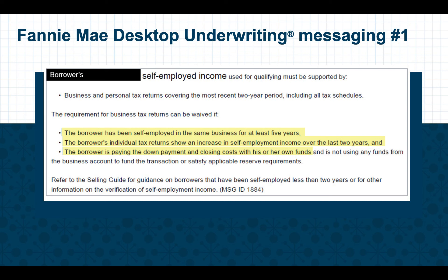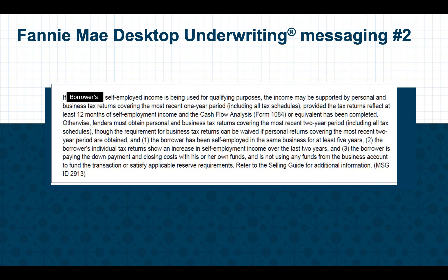Now let's take a look at the other possible message you may receive through DU. With DU message number two, you will be given the option to provide one year of individual and business tax returns as long as 12 months of self-employment has been reported and a cash flow analysis is completed.